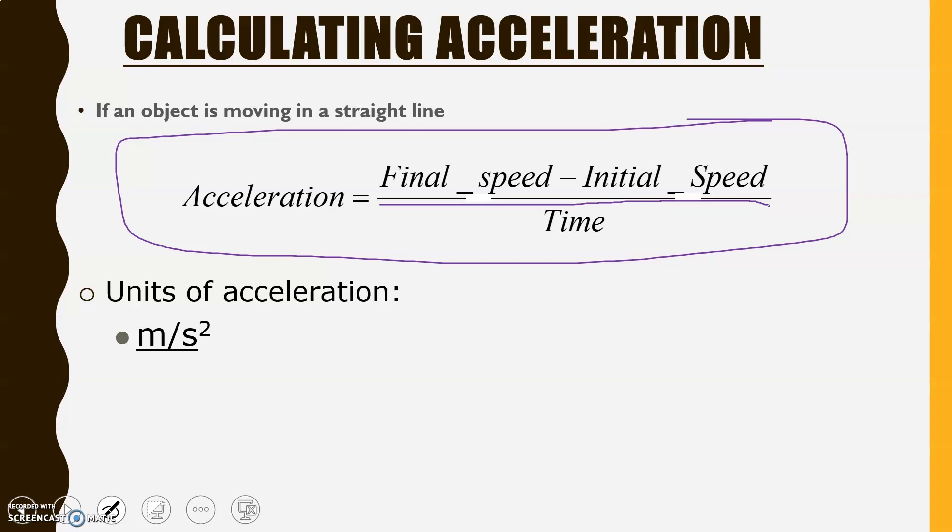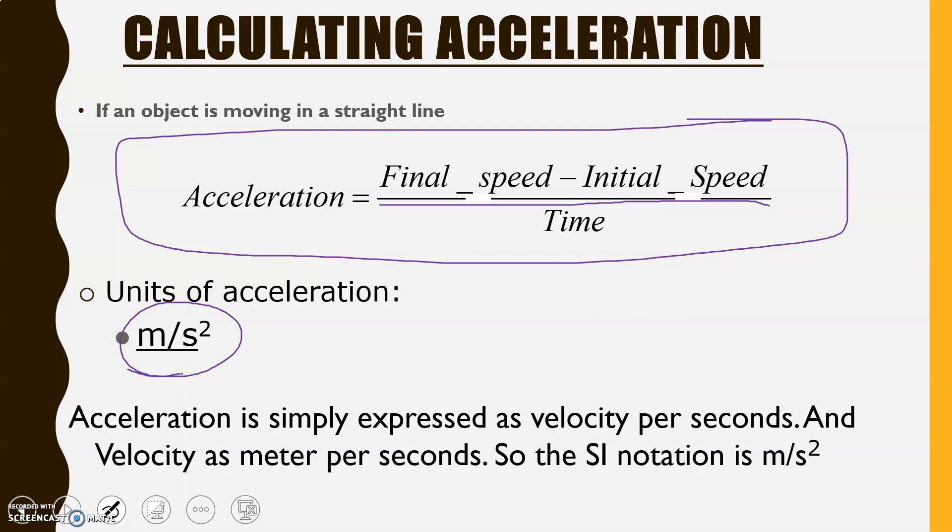The units that you're going to use to describe acceleration every time is going to be meters per second squared. So, the reason why it's those units, second squared, is because acceleration is expressed as velocity per second. Remember that the units we use for velocity is meters per second, right?